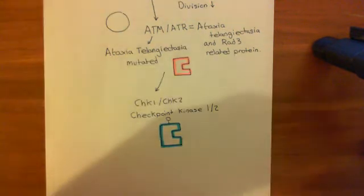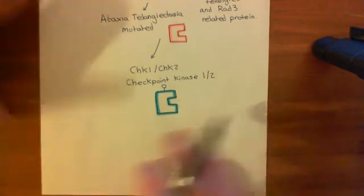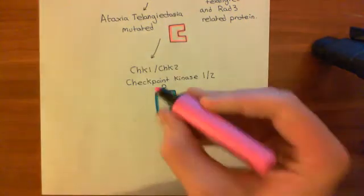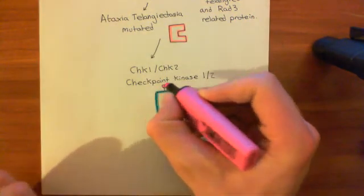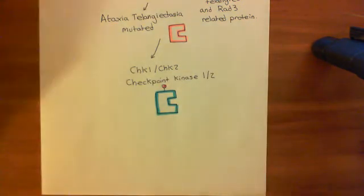What's going to happen now is that checkpoint kinase 1 and checkpoint kinase 2 are going to phosphorylate the protein P53. And by the way, this group sticking off up here, this is supposed to represent the phosphate group that's been added on by ATM or ATR.